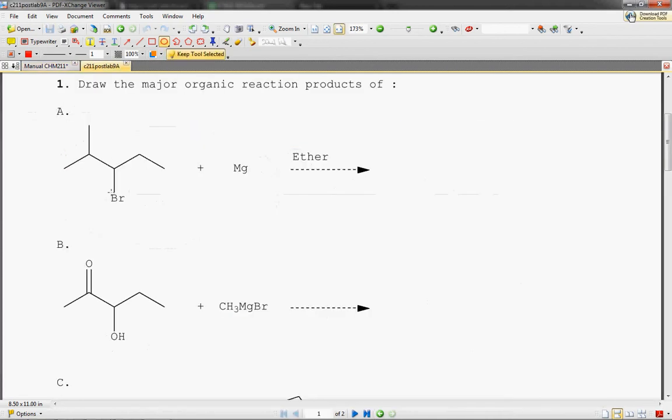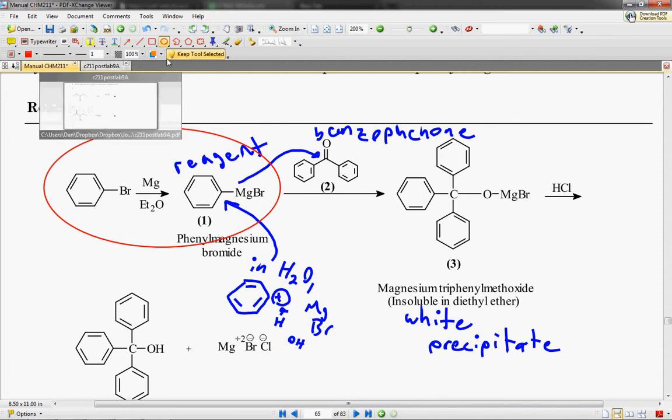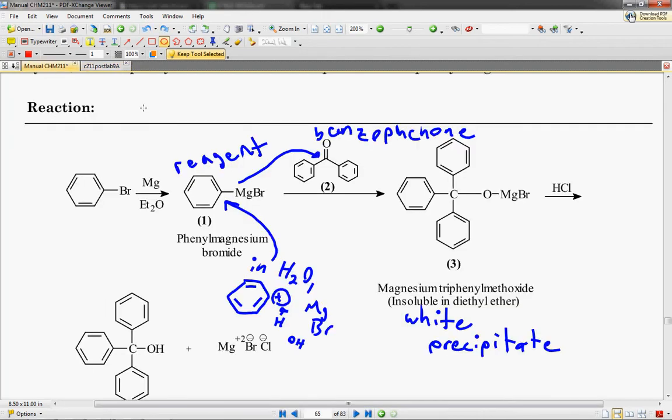So that magnesium is going to essentially substitute or jump in in front of that bromine. And I think almost everyone got that part correctly. Then the second problem is pretty much also identical to this problem right here.